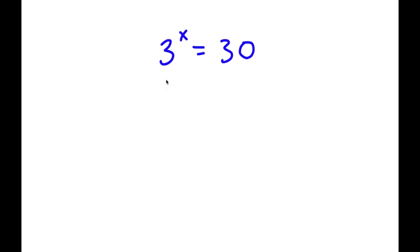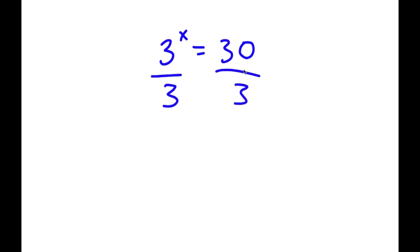In this problem, I have 3 to the power of x is equal to 30. To solve this problem, I'm going to first start by dividing both sides by 3. So now I have 3 to the power of x over 3 is equal to 30 divided by 3, which is equal to 10.